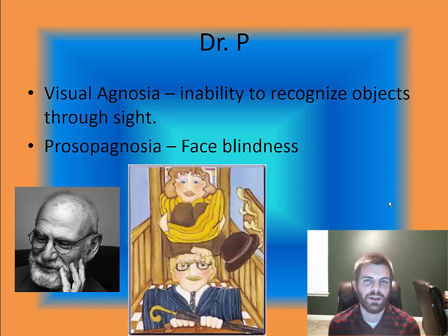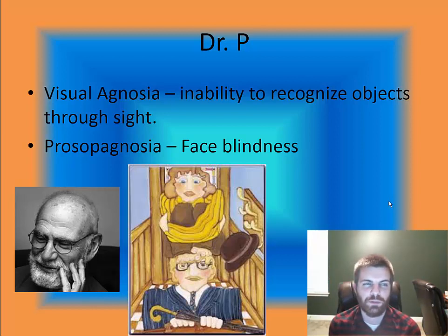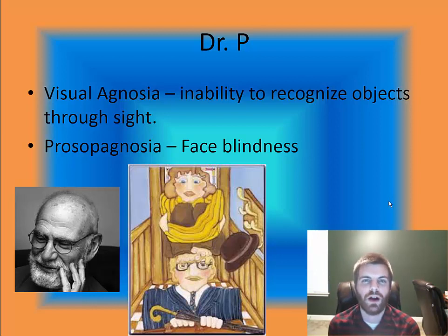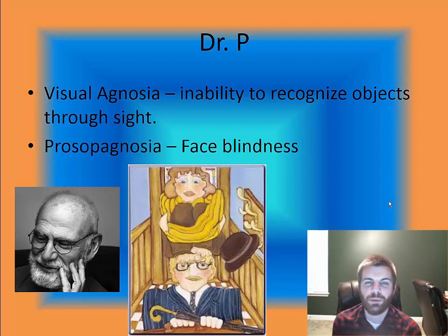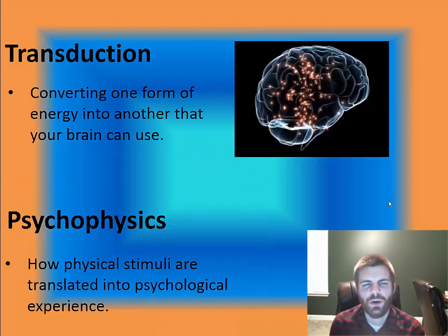Another version of this condition is called prosopagnosia, which is face blindness — an inability to recognize faces. Imagine being unable to identify widely recognized people across many cultures, like Oprah Winfrey, Tom Cruise, Donald Trump, or President Obama. If you suffer from prosopagnosia, you have an inability to know who you are looking at.